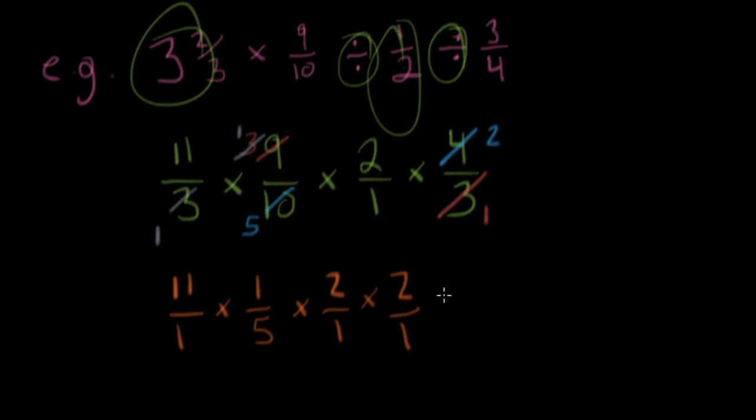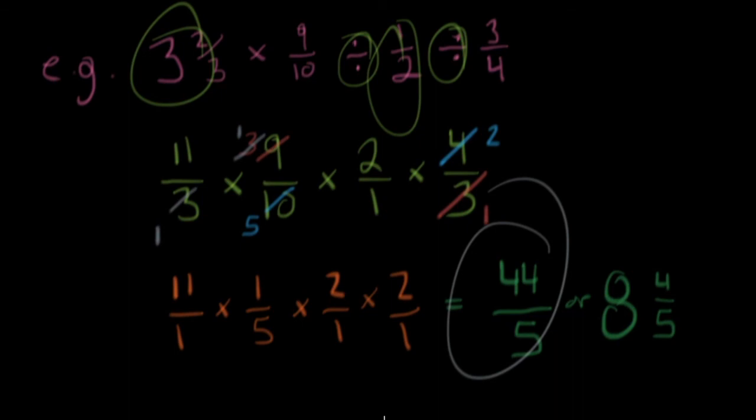Well, that is not too bad to do. We're going to multiply across the top and across the bottom. And what do we end up getting? Eleven times one times two times two. So I think that's twenty-two times two, which is going to be forty-four over five. Or you might want to say eight, what is that, eight and four-fifths, I believe. But you know, I prefer that one. All right, there's multiplying and dividing.